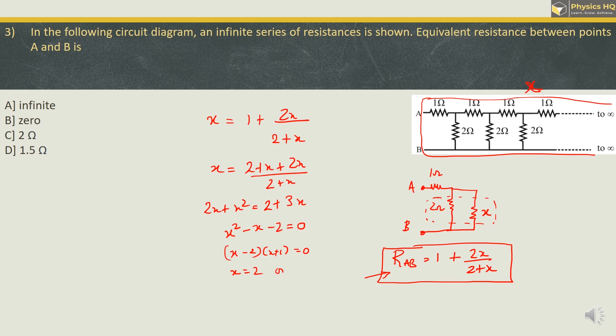And from this we get X is equal to 2 or X is equal to minus 1. We know that resistance cannot have negative values. So the correct value of resistance is 2 over here. So the correct option is option C.